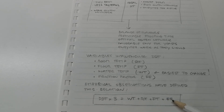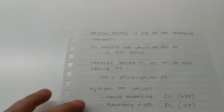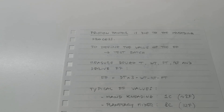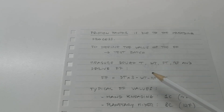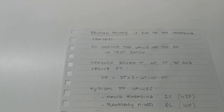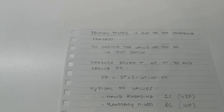The friction factor is the increase in temperature due to the kneading process. The easiest way to determine it is to run a test batch: measure the water temperature, flour temperature, room temperature, and final dough temperature, then use the formula to derive your friction factor.